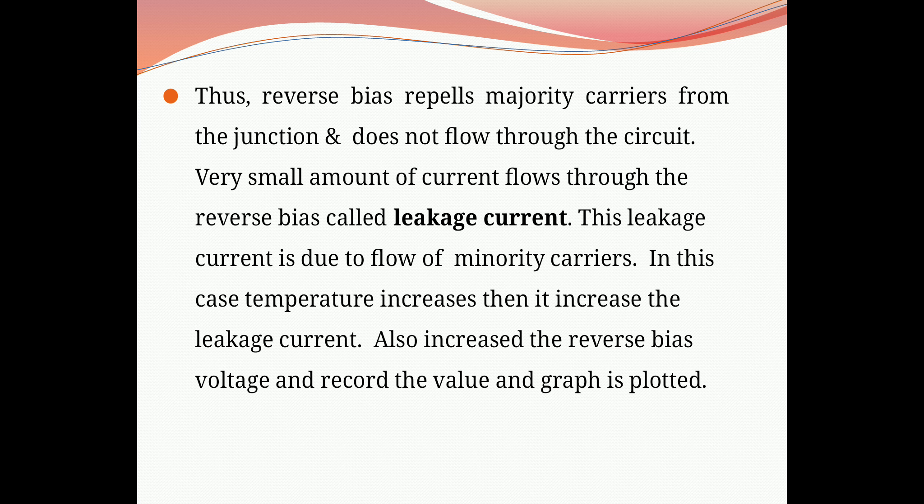Reverse bias repels majority carriers from the junction and they do not flow through the circuit. A very small amount of current flows through the reverse bias, called leakage current. This leakage current is due to the flow of minority carriers in both regions — minority carriers in the depletion layer cross the junction because of thermal energy. The minority carriers are holes in the N side and electrons in the P side. Any increase in temperature of the diode increases the leakage current.